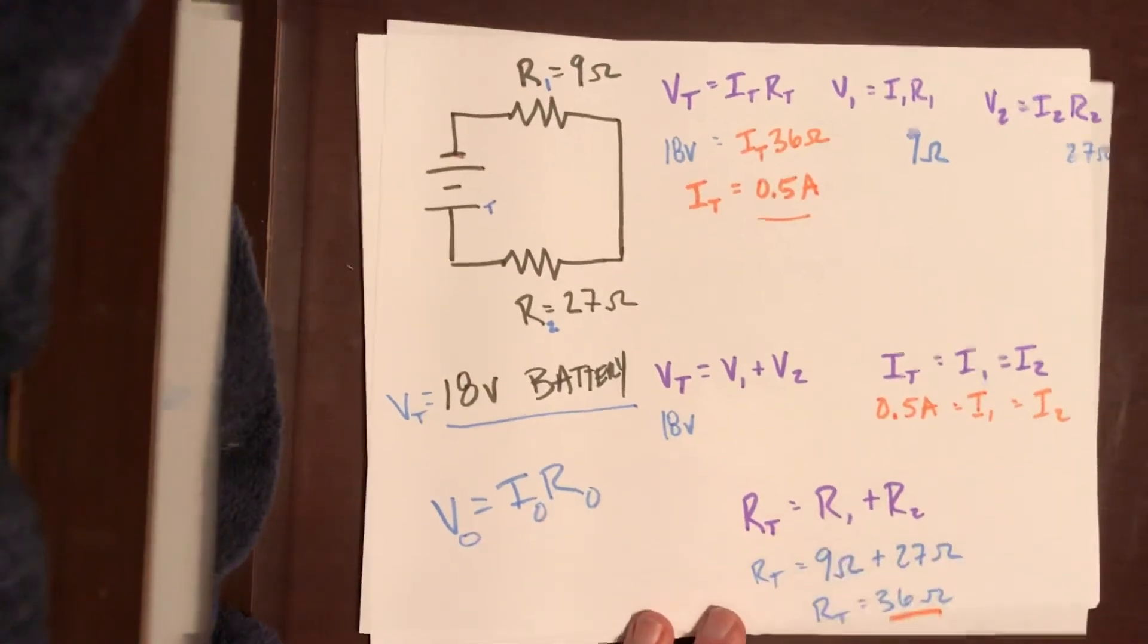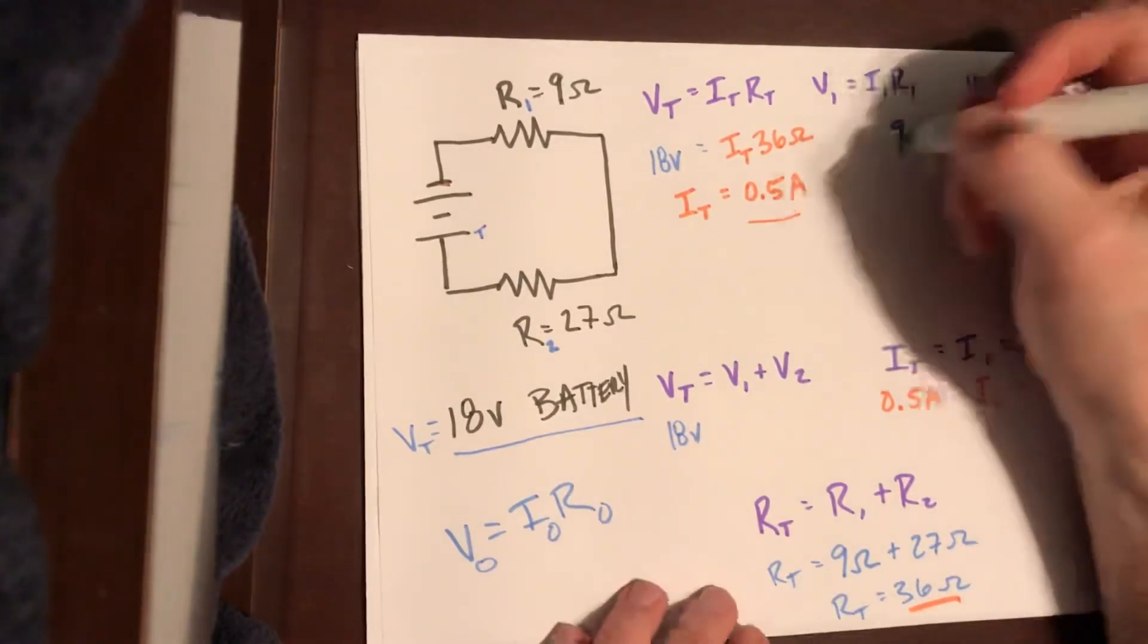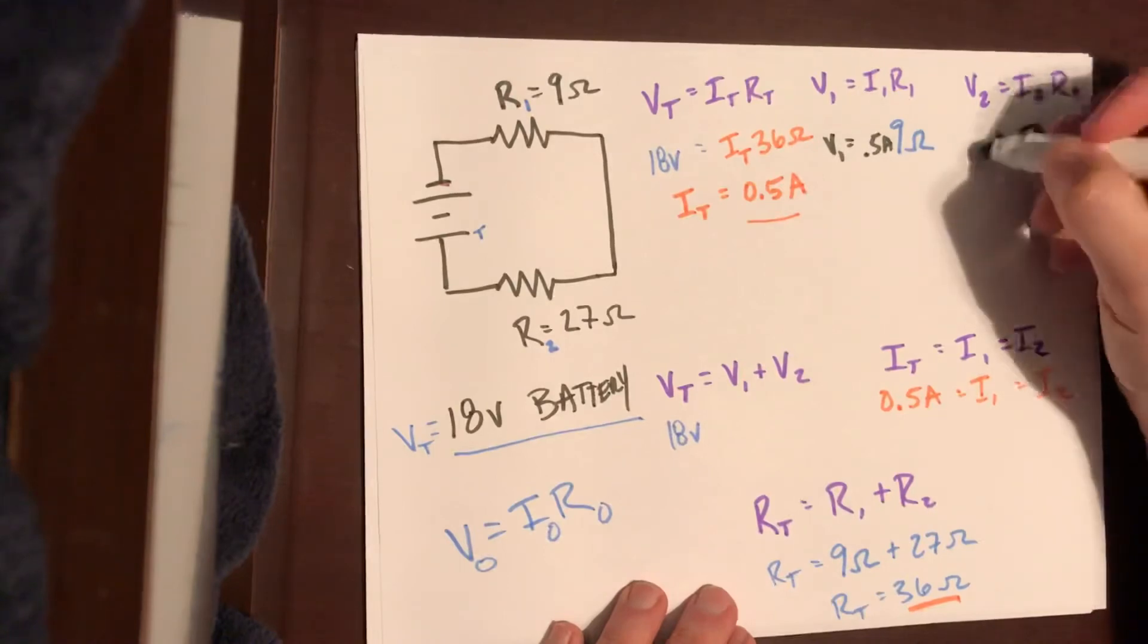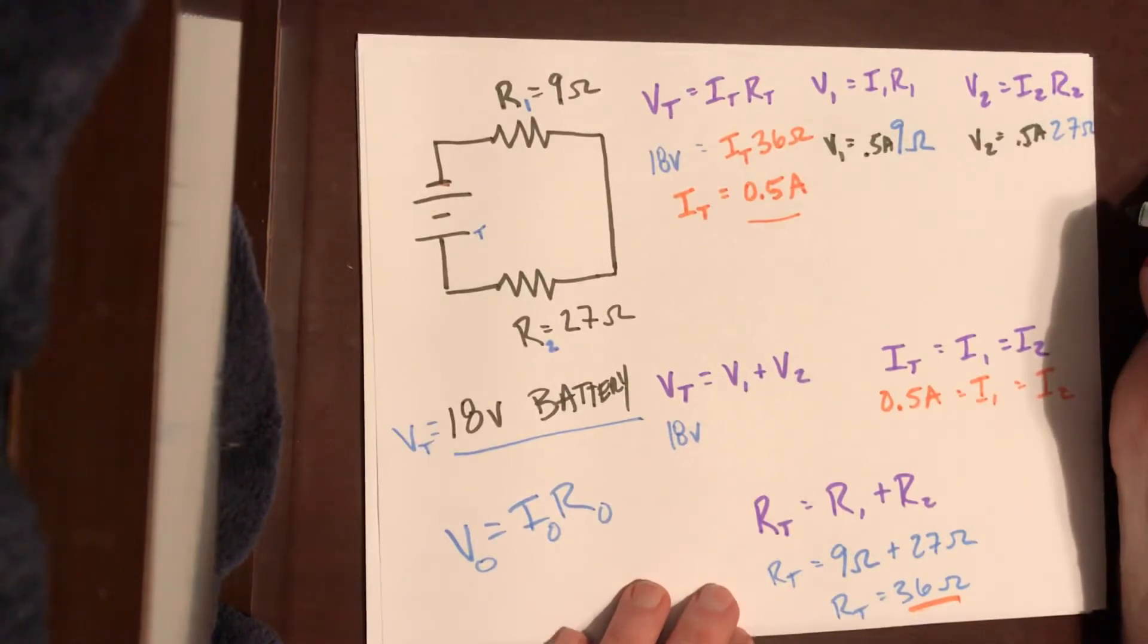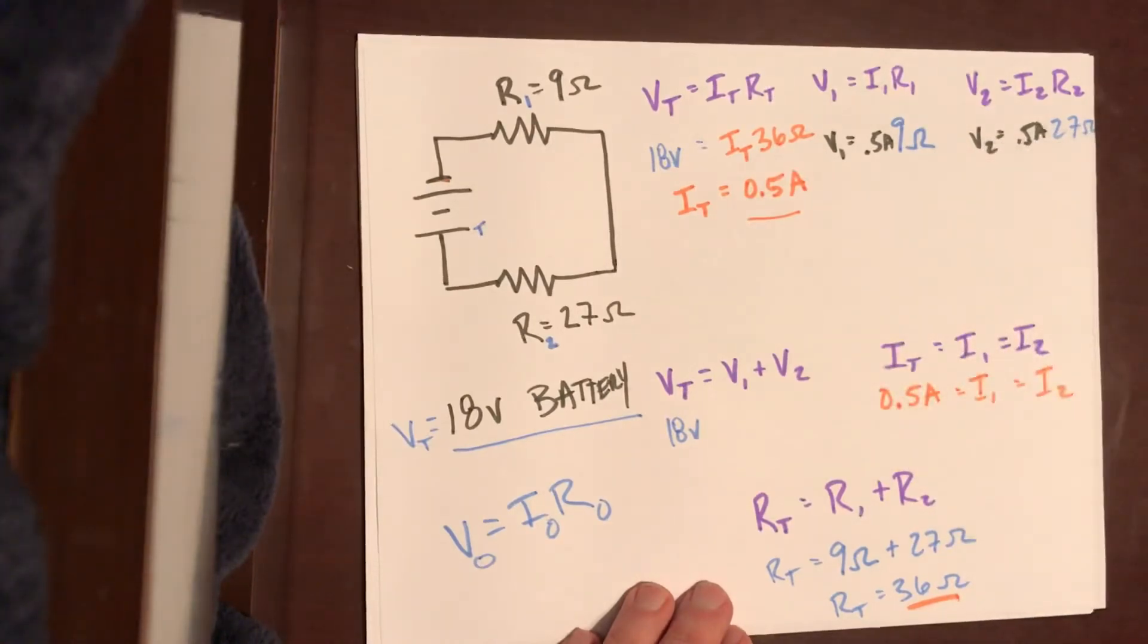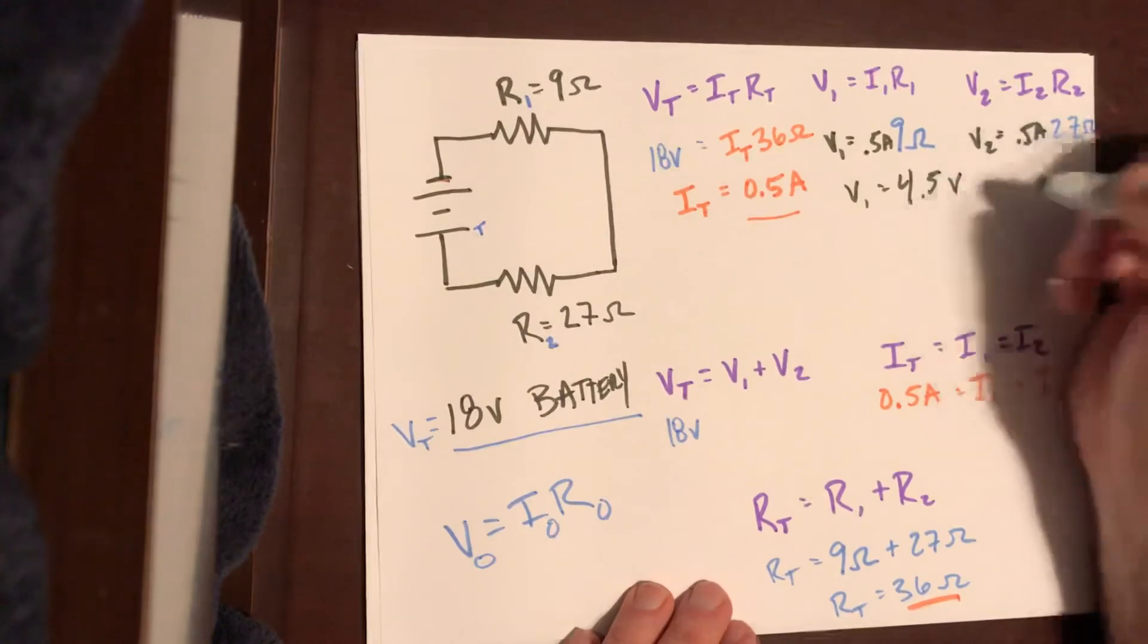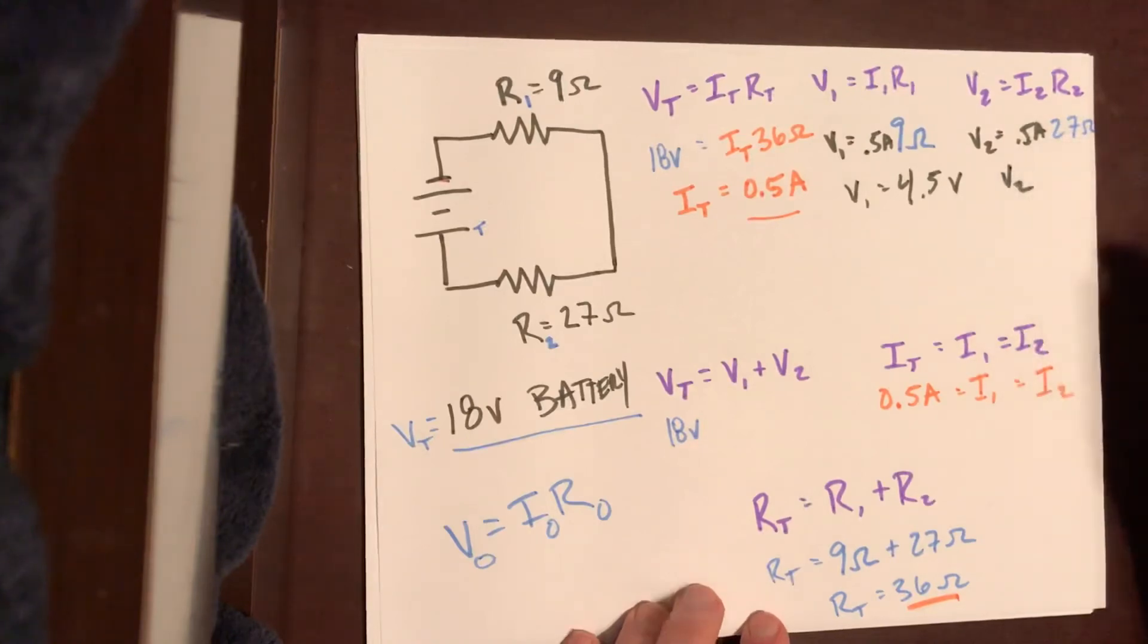I'm going to change colors just because I'm getting a little close there. So we get that this is 0.5 amps equals V1, and we get that this 0.5 amps equals V2. Multiplying each of these by a half, this is 4.5 volts, and over here we have V2 should be equal to 13.5 volts.